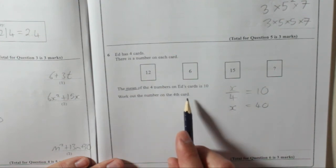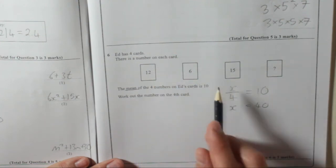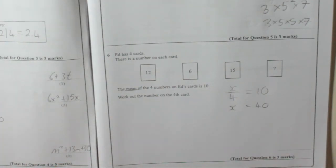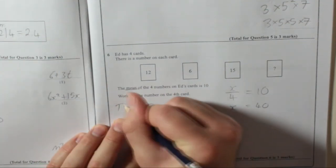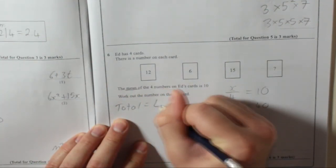Work out the number on the fourth card. So that means you add them all up, divide by four, and get ten. So you know that something divided by four is ten. What do you divide by four to get ten? Well, if you do ten times four, you'll find out it's forty. So the total is forty.